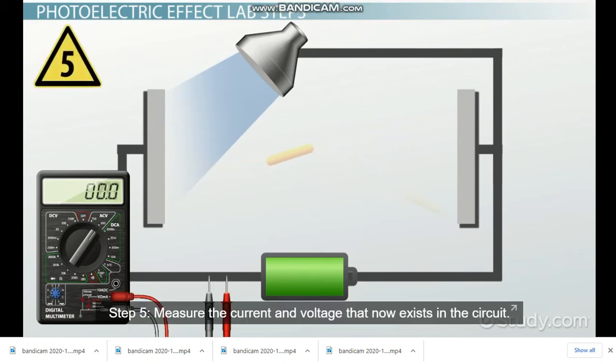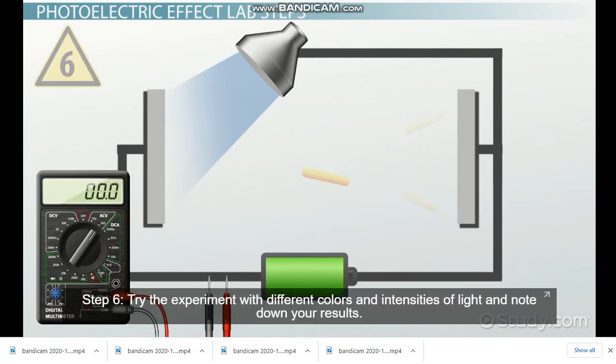Step 5: Measure the current and voltage that now exists in the circuit. Step 6: Try the experiment with different colors and intensities of light and note down your results.